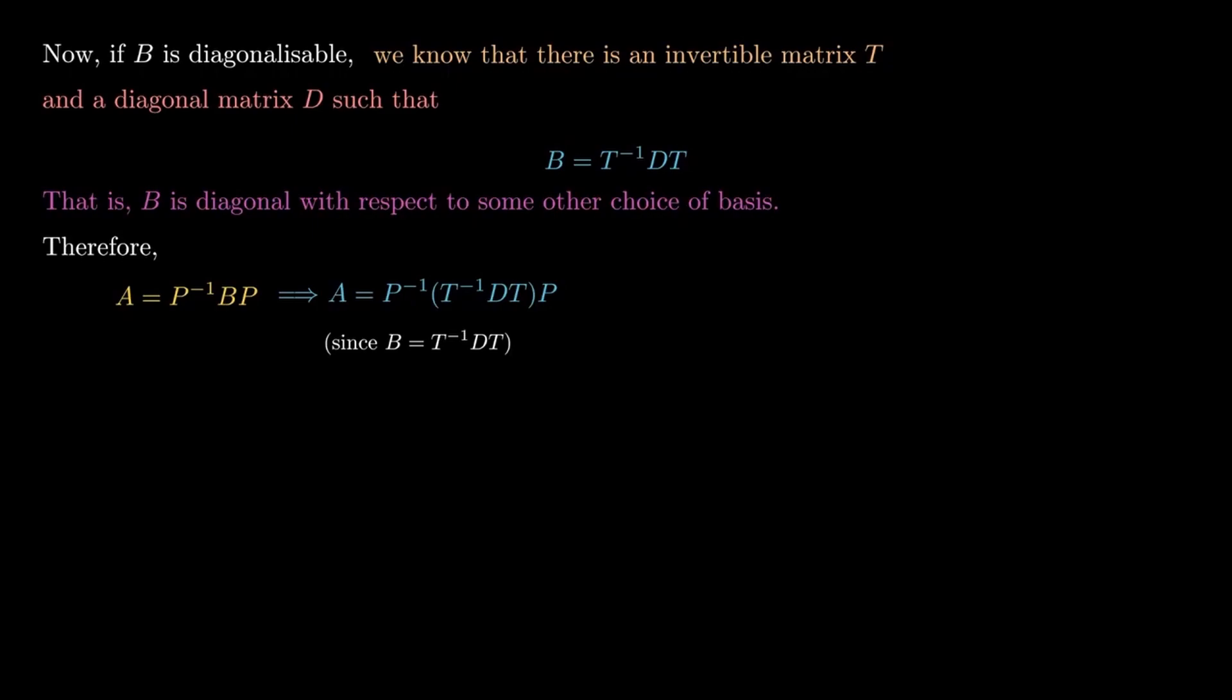D(TP). But now TP is an invertible matrix—you take the product of two invertible matrices, you get an invertible matrix. So in other words, if A is similar to a diagonalizable matrix, it has to be diagonalizable.